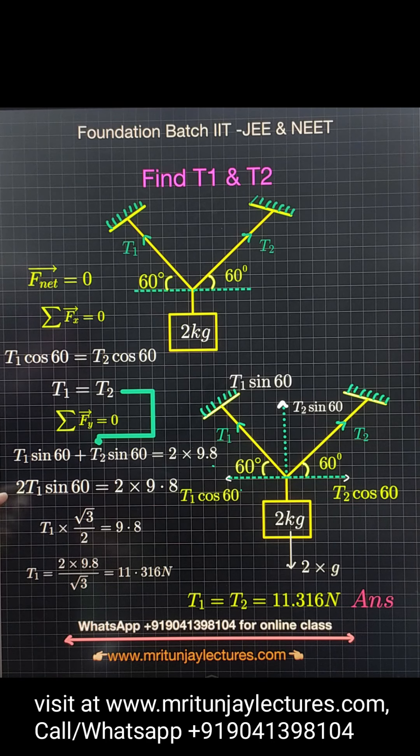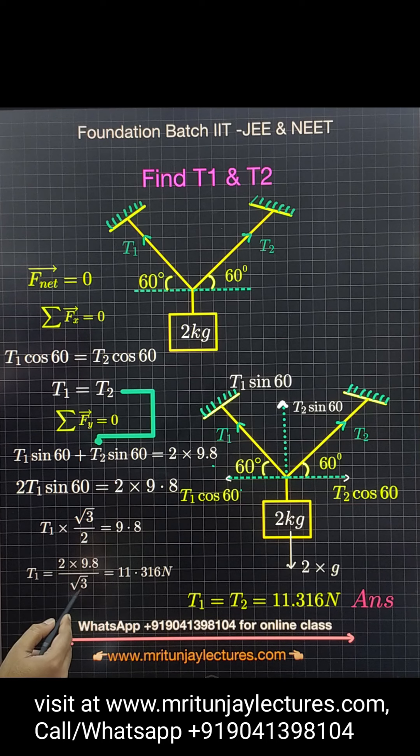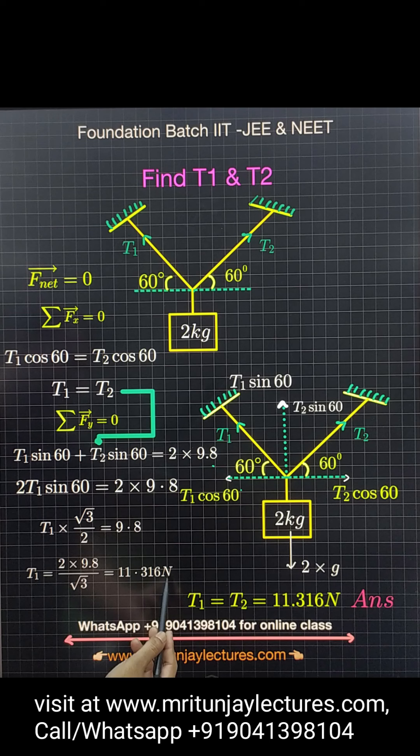Sin 60 is root 3 over 2. Canceling the 2s, we get T1 times root 3 equals 2 times 9.8. So T1 equals 2 times 9.8 divided by root 3. What's the answer?